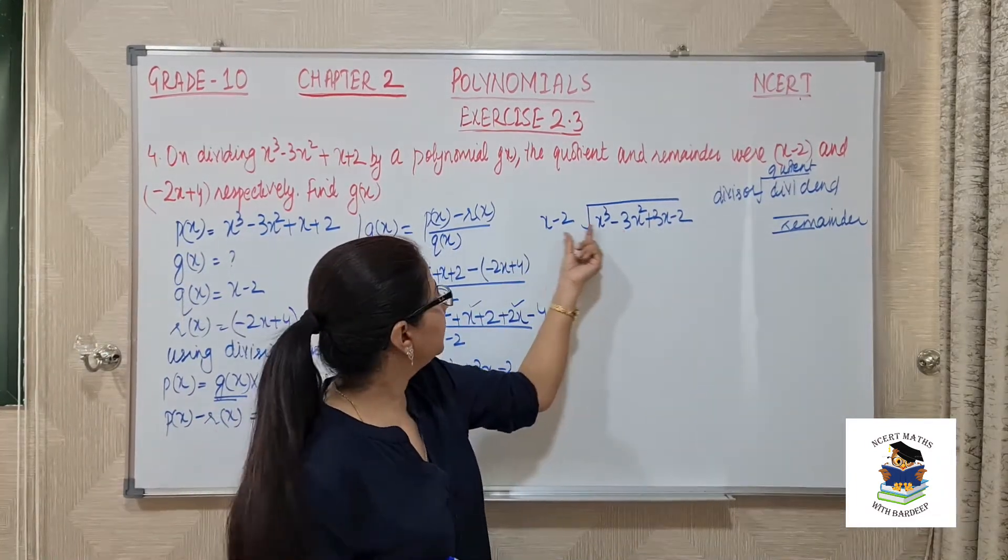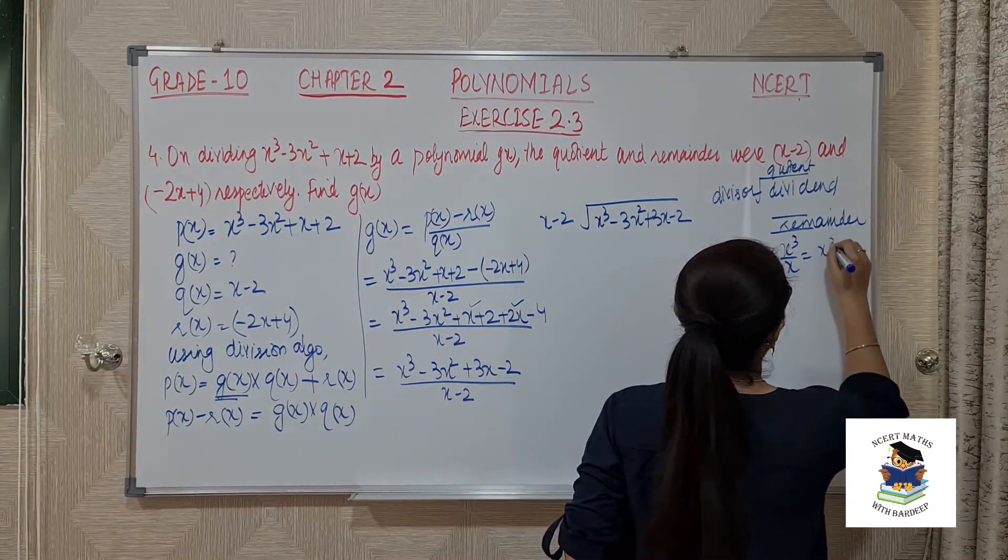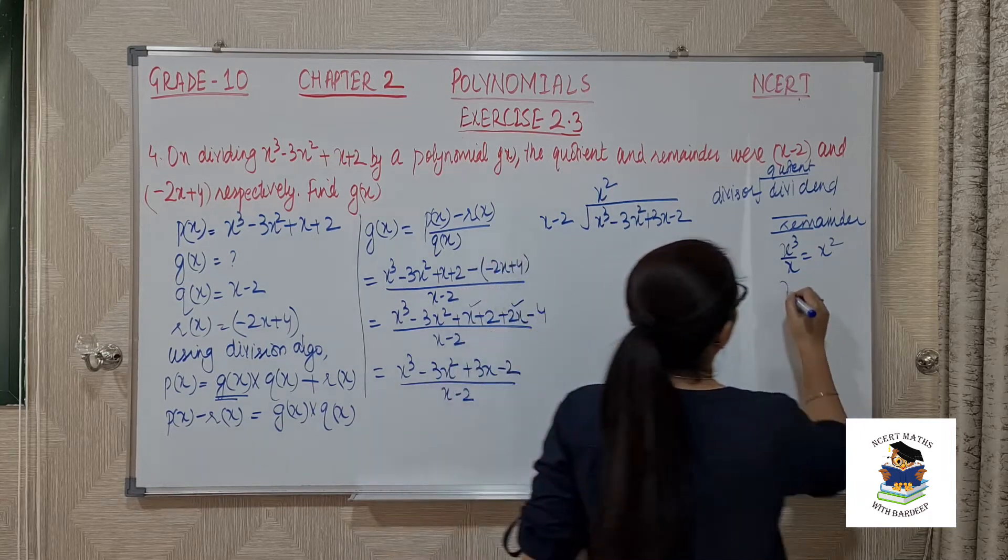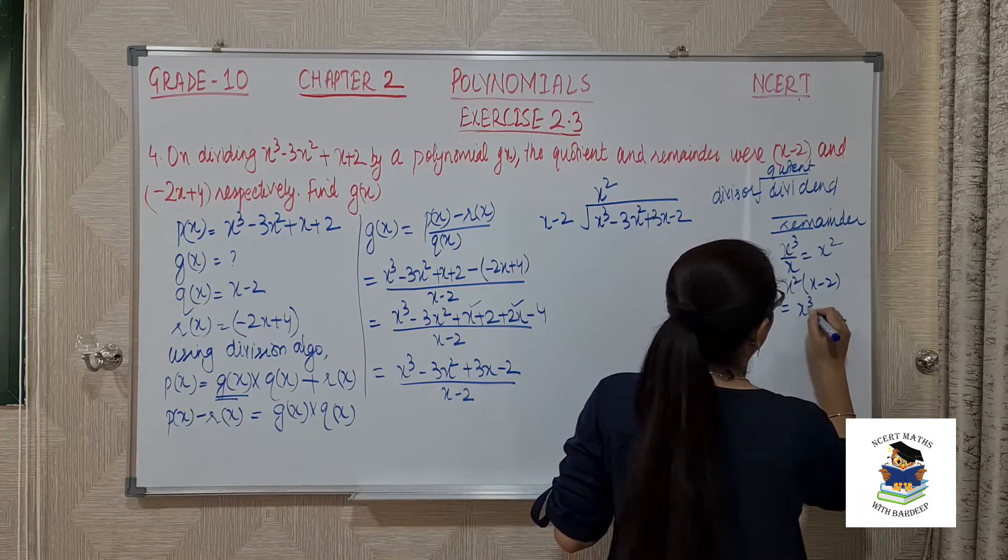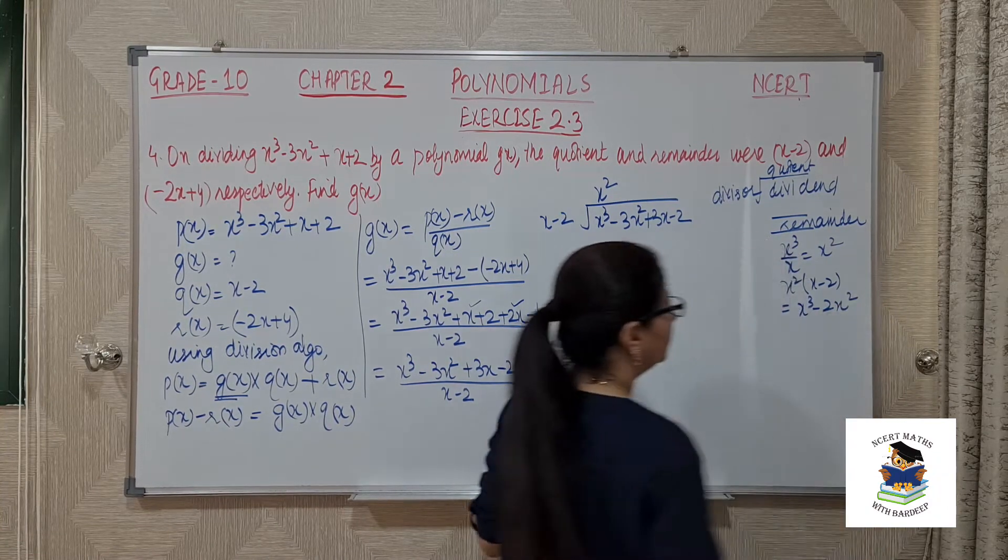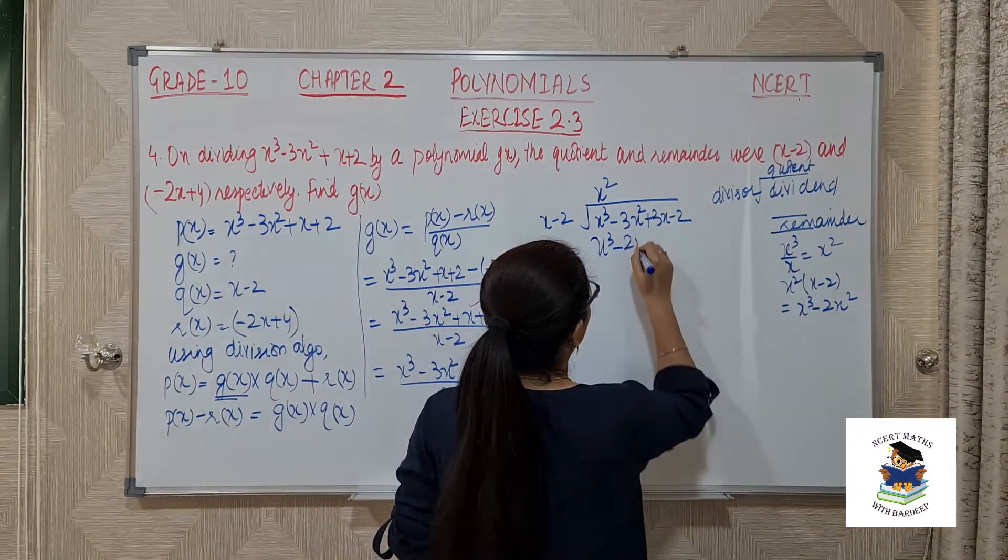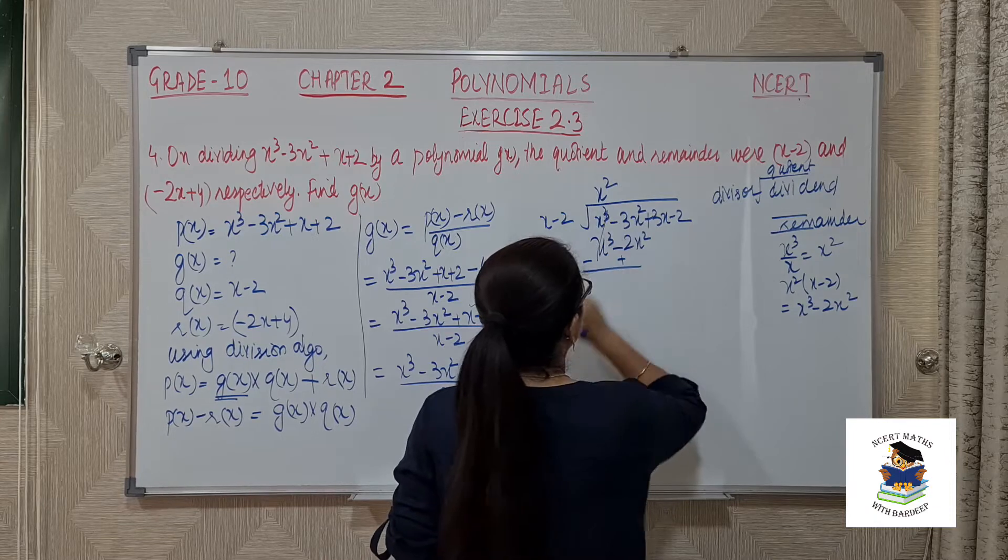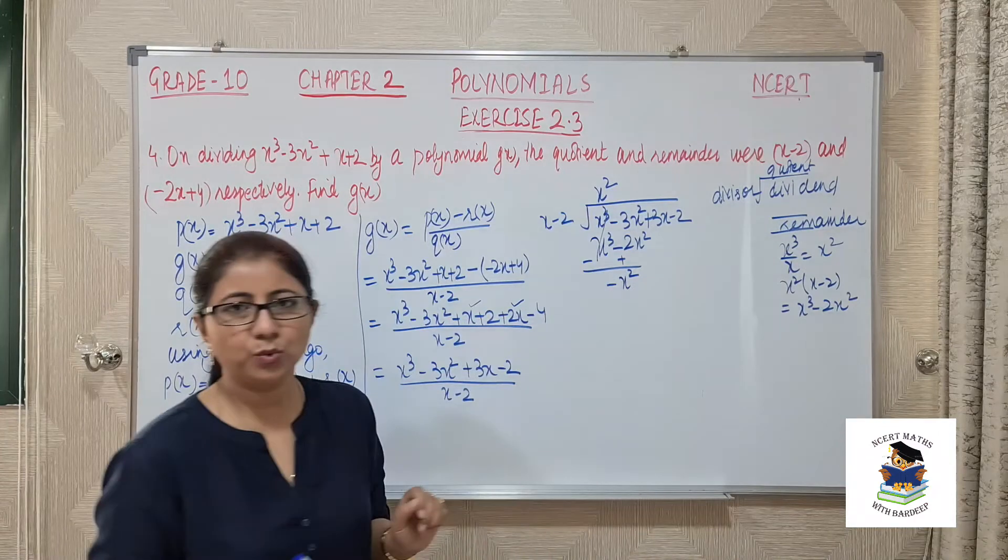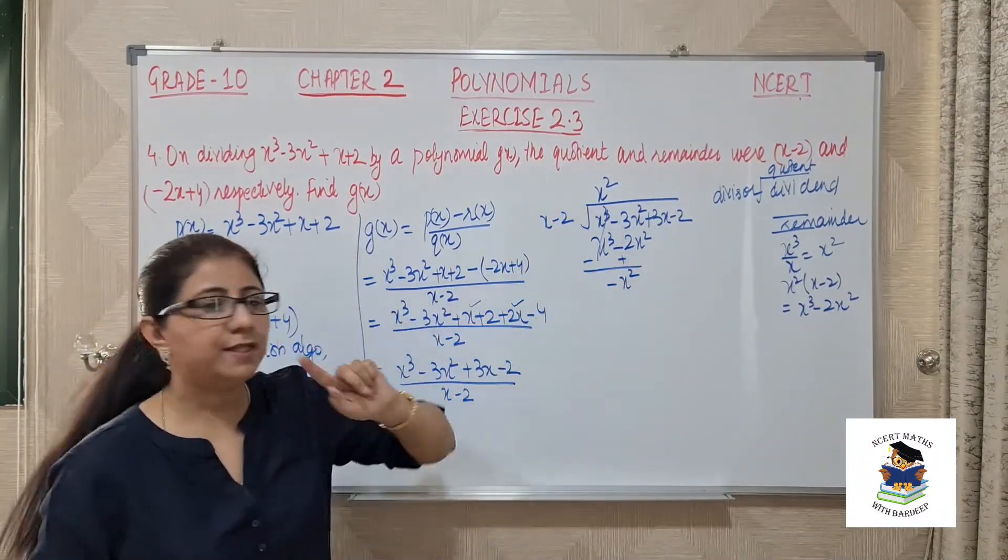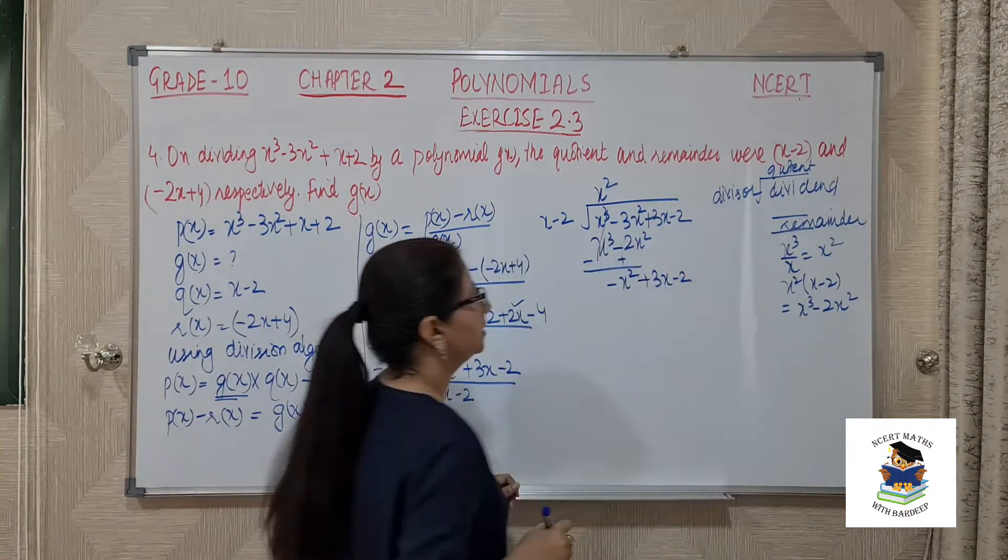x cube minus 3x square plus 3x minus 2 divided by x minus 2. First step is x cube over x will give me x square. This is my first term and x square should be multiplied with x minus 2. So I will get x cube minus 2x square. Change the signs, this will be cancelled. Minus 3 plus 2 is minus x square, plus 3x minus 2.